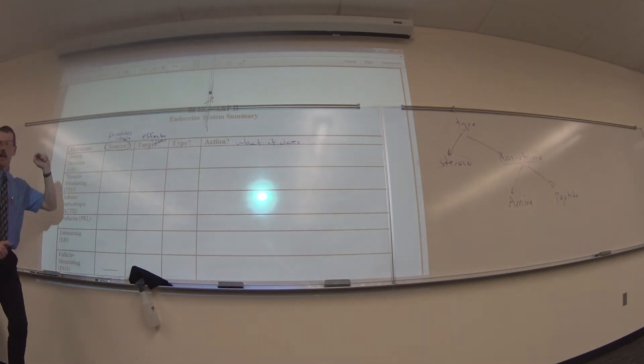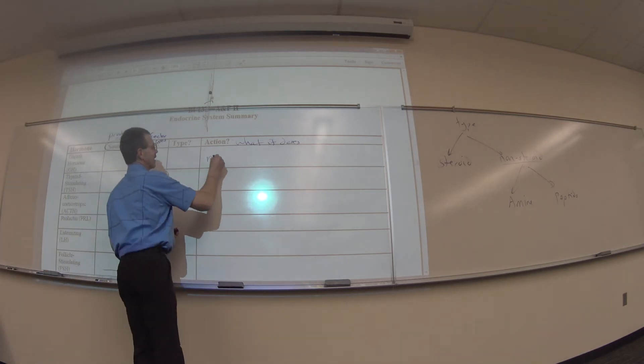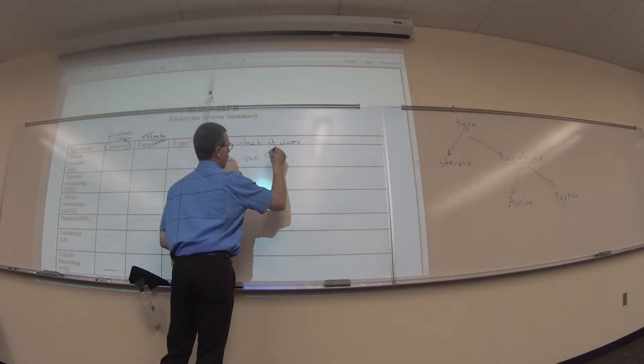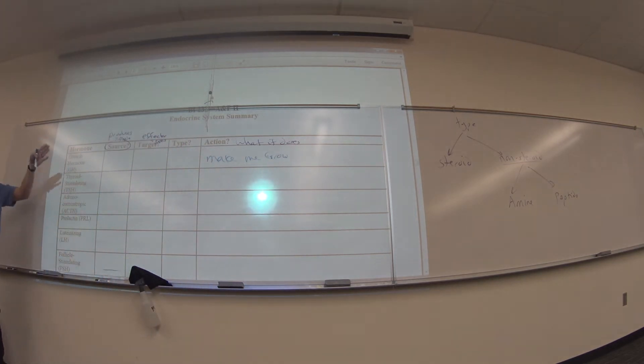So growth hormone. Because we're biologists and we're pretty dumb, we always put answers in the name. So growth hormone tells me an action. What does it do? Grow. Makes me grow. Yes, that's an A answer. This is for you. I know what Saladin says. This is for you. It makes me grow.